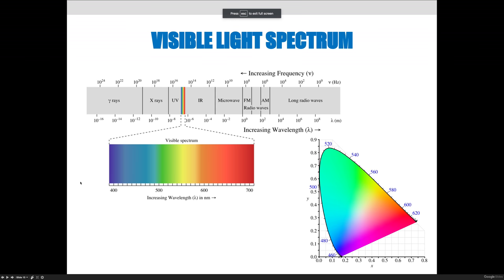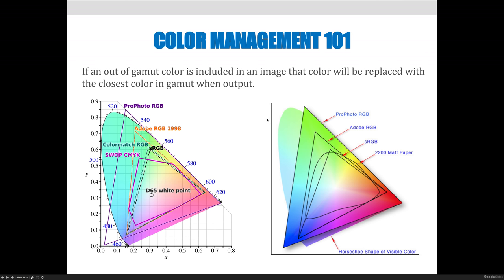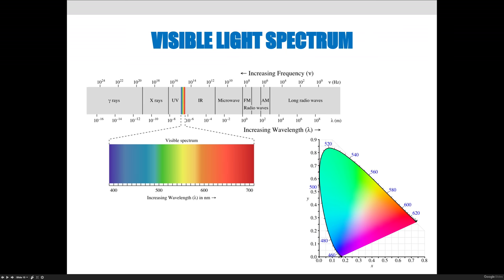Before moving on to techniques for color management in your projects or everyday life, I want to explain what I meant in the last slide by color modes and gamuts — the range of color that different color modes can reproduce. This parabola in the background represents all the possible colors linked to the visible light spectrum. The two illustrations here show all the possible colors in the entire world.